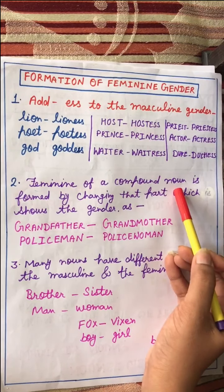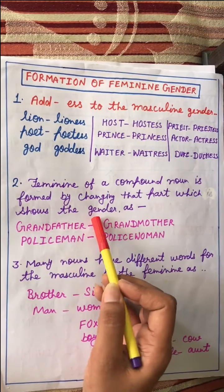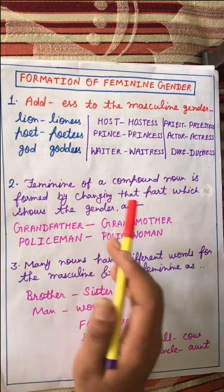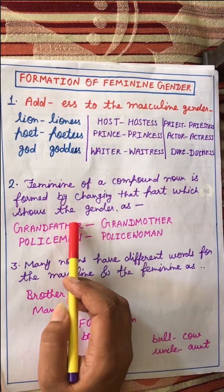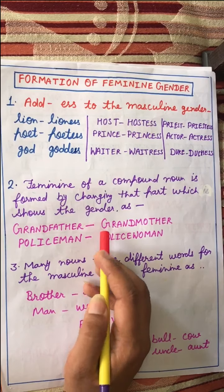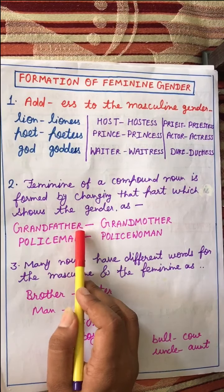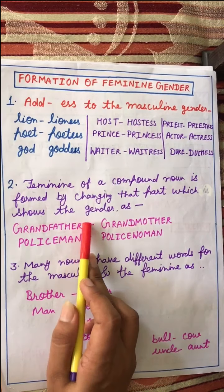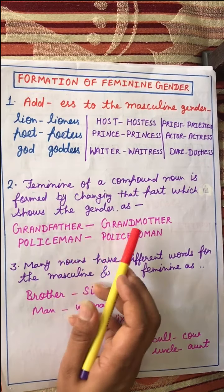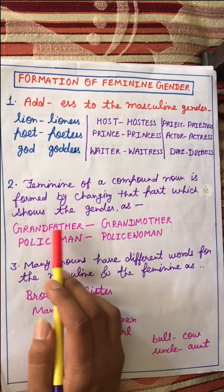The feminine of masculine gender is formed by changing the part which shows the gender. When we have a compound noun, we change a specific part of it to form the feminine. For example, father will be changed into mother, and grandfather becomes grandmother. These are compound nouns — words made up of two words joined together.